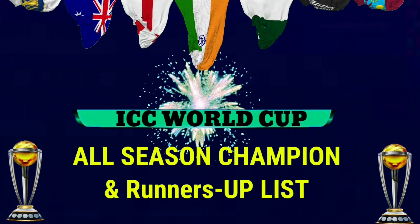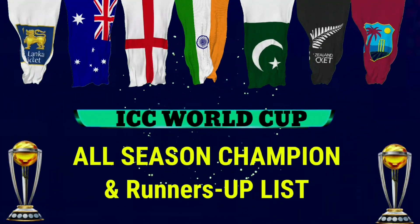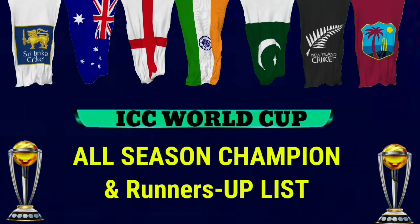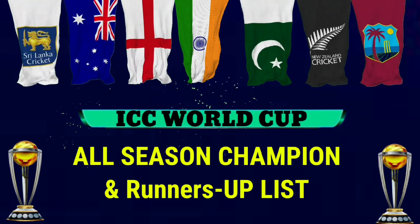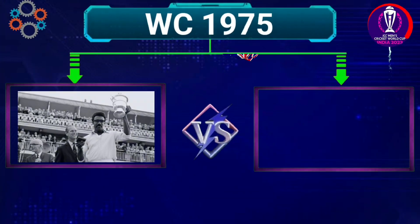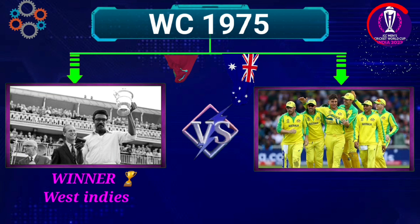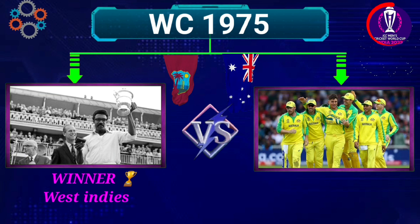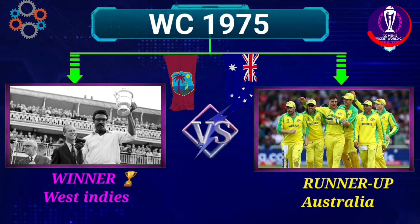ICC World Cup All Session Champions and Runners-up list. Number 1: World Cup 1975, Winner West Indies, Runners-up Australia.